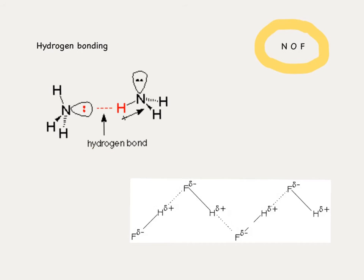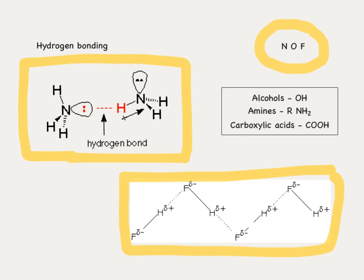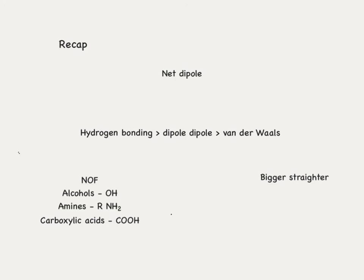Hydrogen bonding only occurs between oxygen lone pairs bonded to hydrogens and other hydrogen atoms, between nitrogen lone pairs bonded to hydrogens and other hydrogen atoms, and in the case of hydrogen fluoride. In ammonia, the hydrogen bond occurs between the lone pair on nitrogen and the hydrogen on a neighbouring ammonia molecule. In organic chemistry, you'll also see hydrogen bonding in alcohols (O–H), amines (RNH₂), and carboxylic acids.